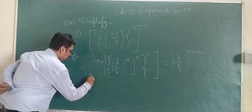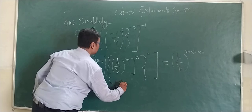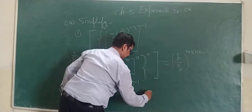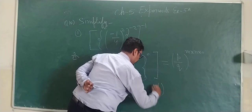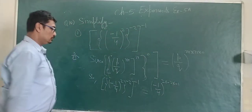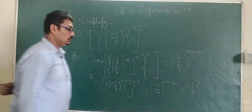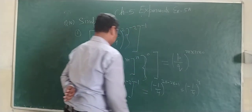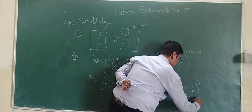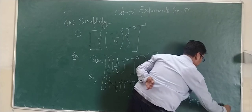So minus 1 upon 4 whole square having power minus 2 having power minus 1 can be written as minus 1 upon 4 to the power 2 multiplied by minus 2 multiplied by minus 1. It becomes minus 1 upon 4 to the power 4, which equals 1 upon 256. This is the answer.